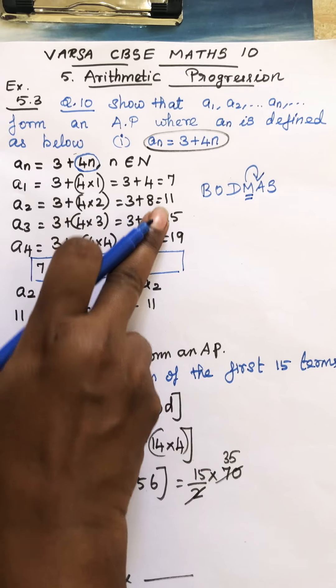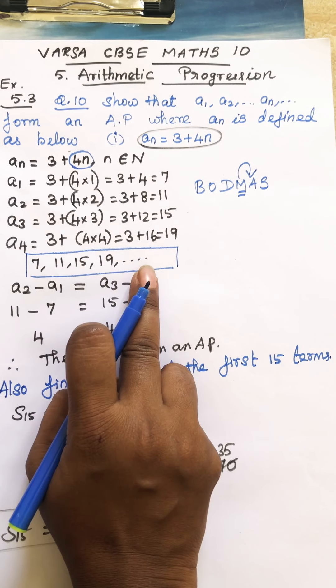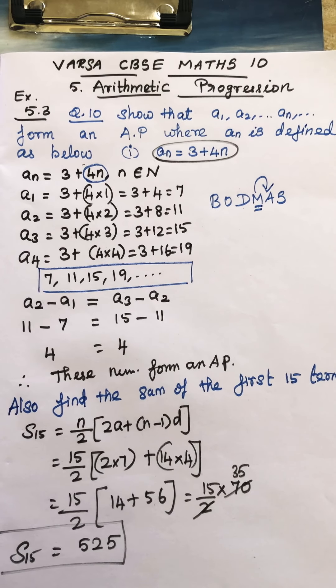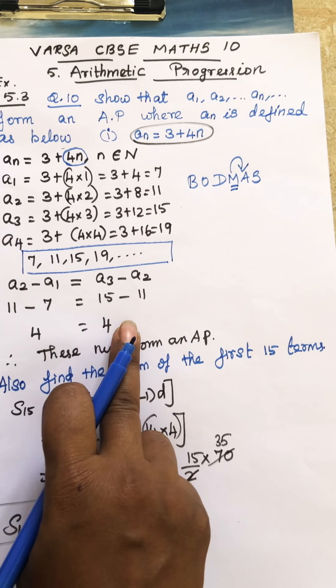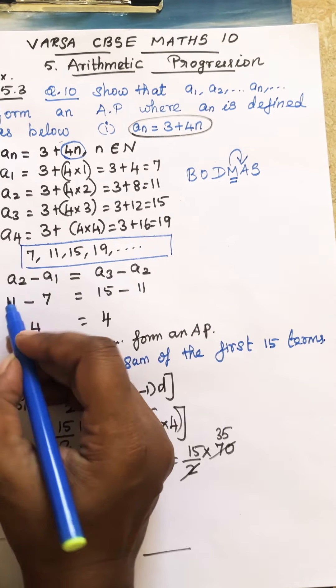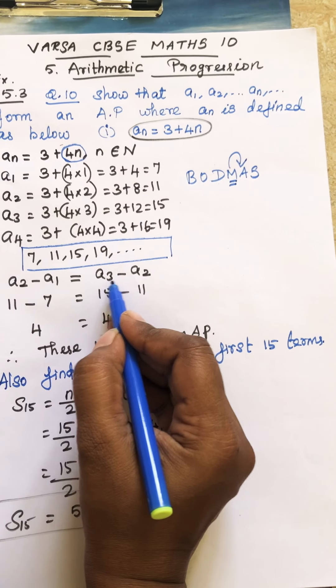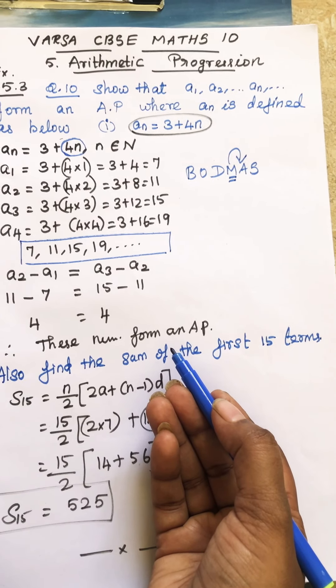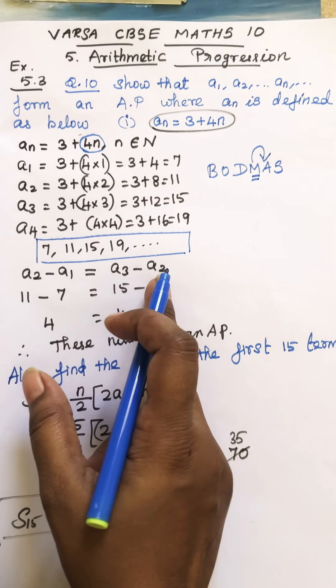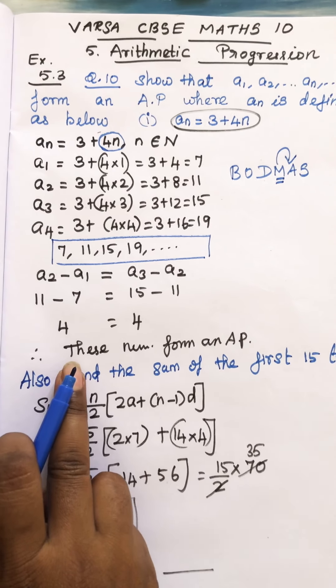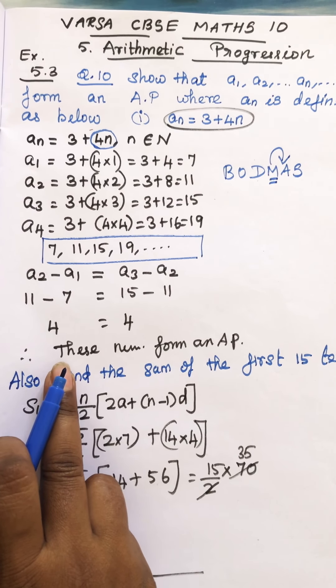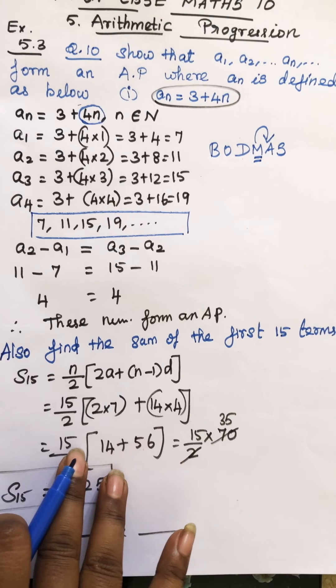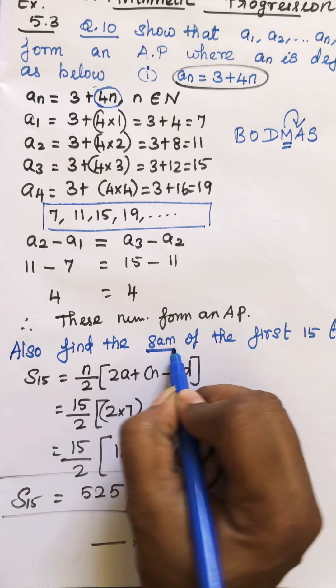So that you will get 7, 11, 15, and 19. These are the terms of AP. So here in this question they have asked show that this forms an AP. Very simple. A2 minus A1 and A3 minus A2, if it is equal we can say it is an AP. So we found that, the difference, common difference. So at last we have concluded it is an AP. This forms an AP.